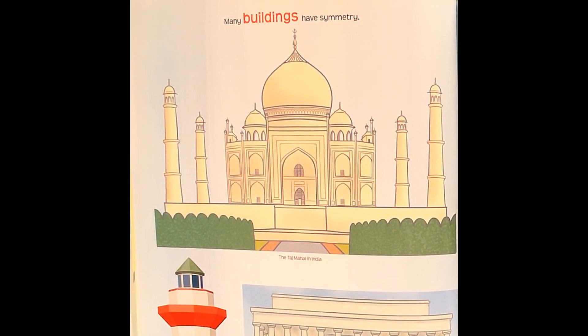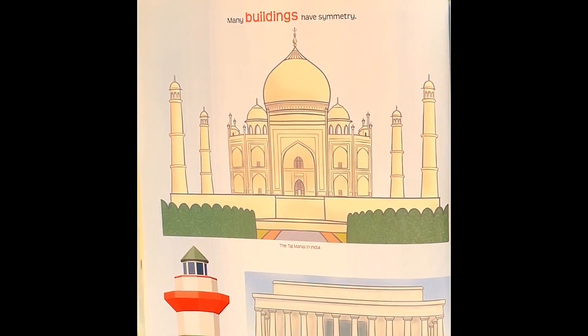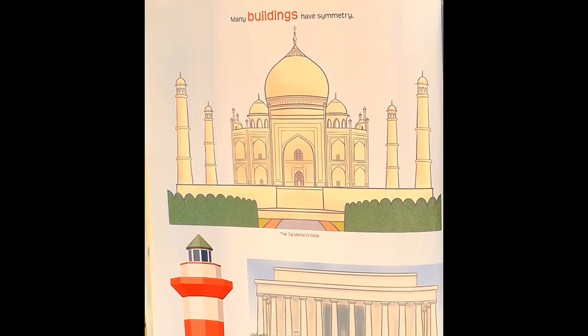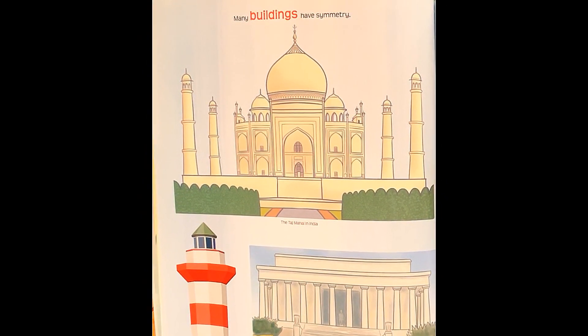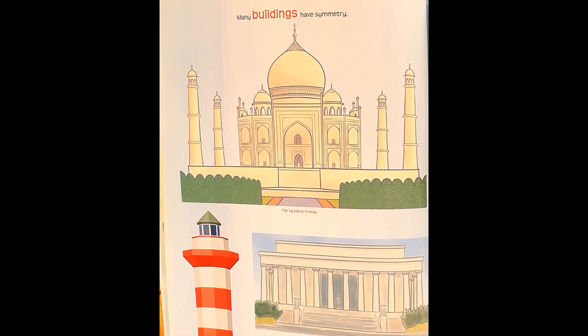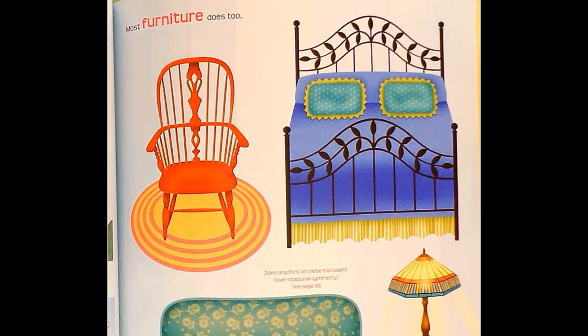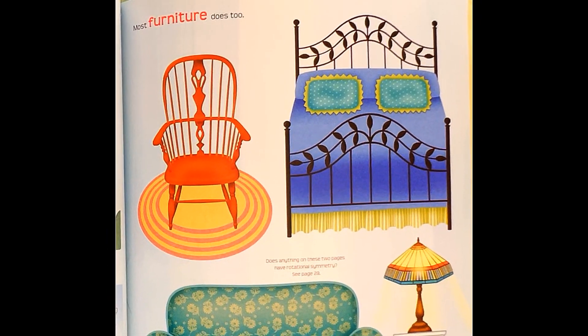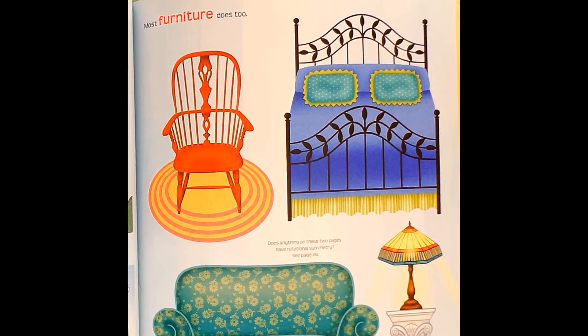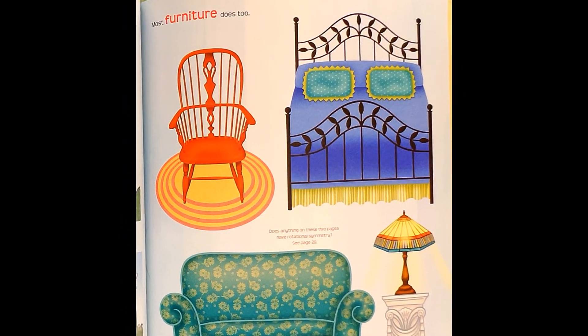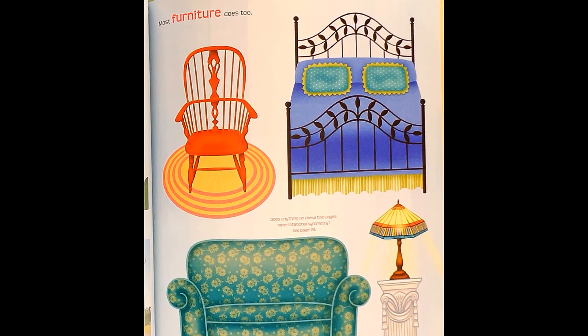Many buildings have symmetry. The Taj Mahal in India, Hilton Head Island Lighthouse, the Lincoln Memorial in Washington, D.C. Most furniture does too. Does anything on these two pages have rotational symmetry? See page 29.